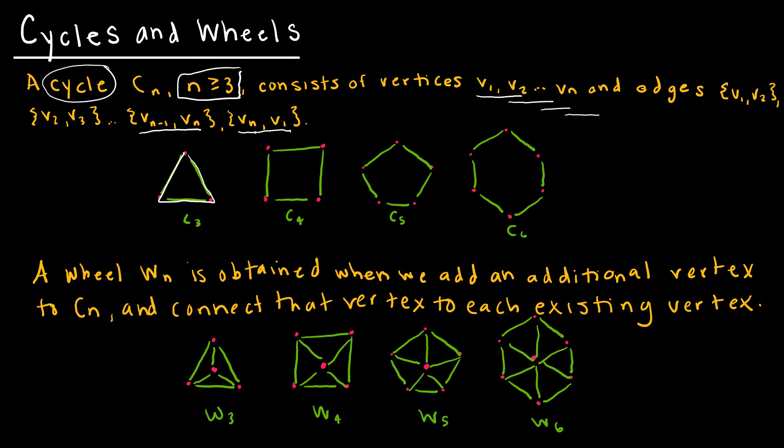A wheel is what happens when we take a cycle and add just one additional vertex in the middle and connect it to all of the existing vertices. For instance, here's C3, the cycle for 3.